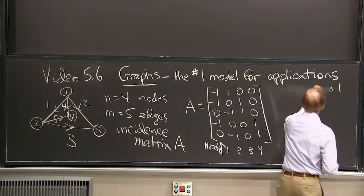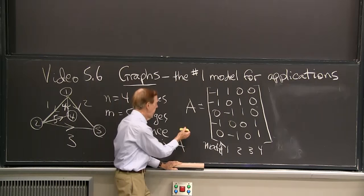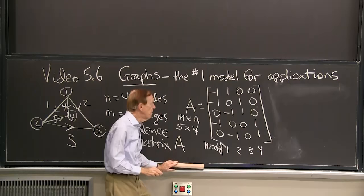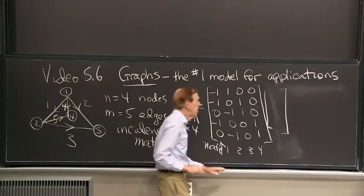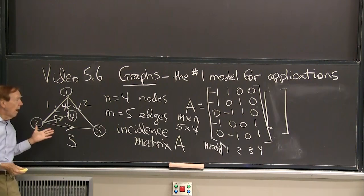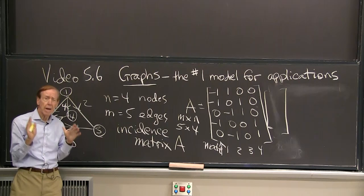OK. That matrix has four columns. It's a five by four matrix. m by n, five by four. So it multiplies a vector with four components. And those four components will come from the four nodes. And maybe they represent voltages at the nodes. Let me think like an electrical engineer for a moment.